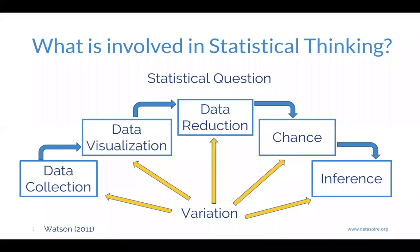As a reminder, when we're thinking statistically, what does this actually involve? We ask a statistical question — a question that can be answered from data. So we need data collection, we need to visualize the data, we have data reduction in terms of only using the data that we need, we determine or summarize it, calculating things from it. We determine if what we're seeing in the data is by chance alone or if it's actually an indication of what's going on in the phenomenon or system we're studying. And then we can make inferences from those data. There is variation in every step along the way, so we need to think about that variation as we're answering our statistical questions.